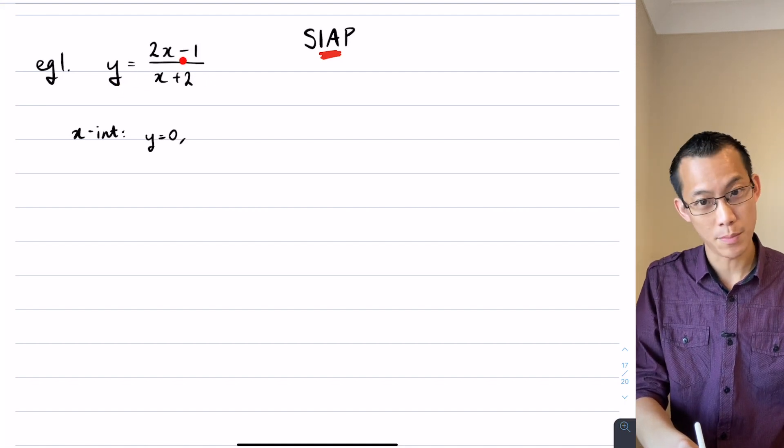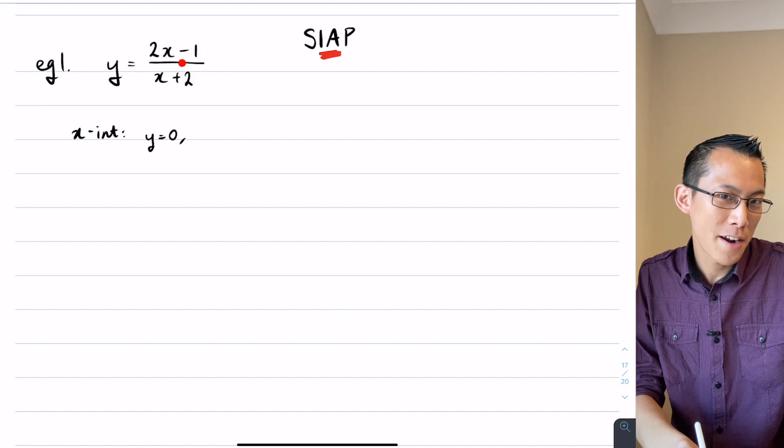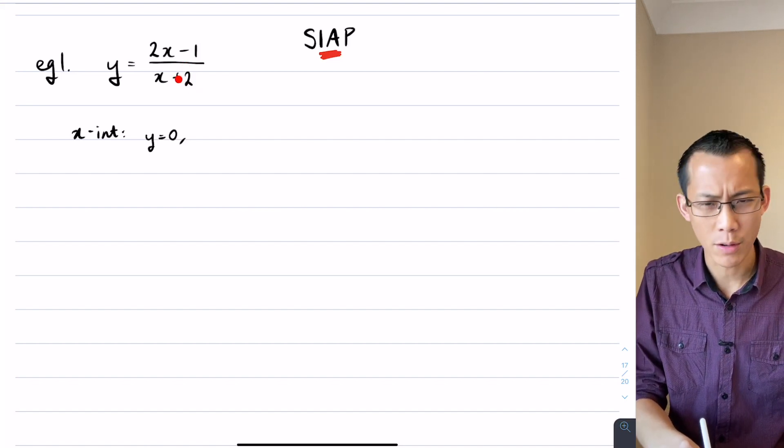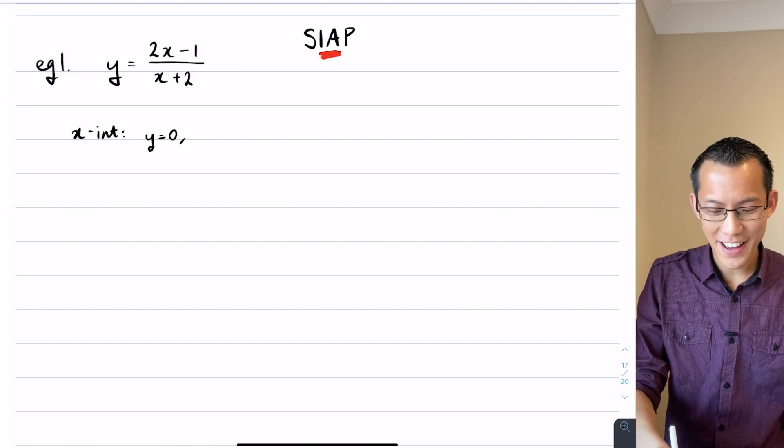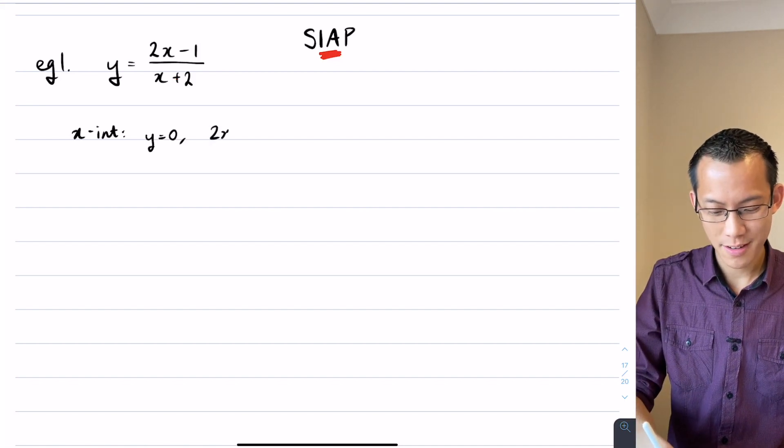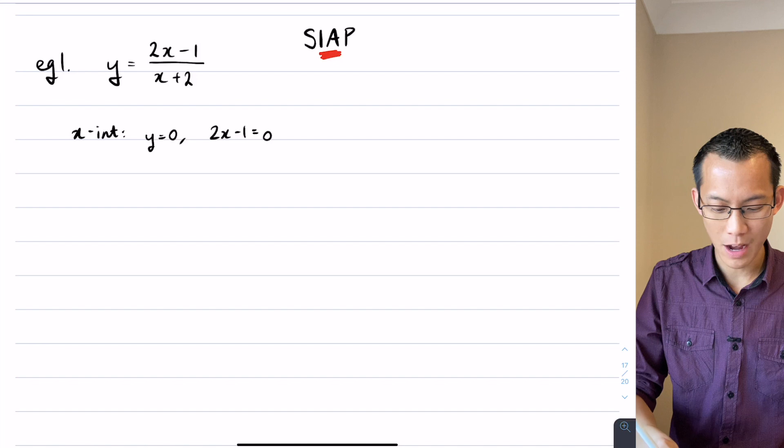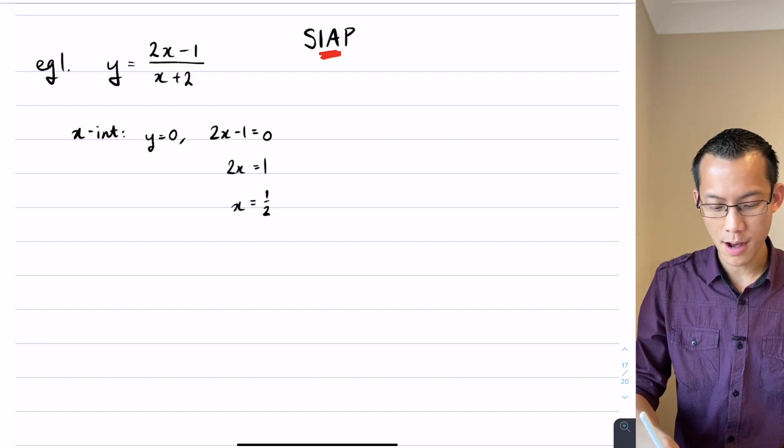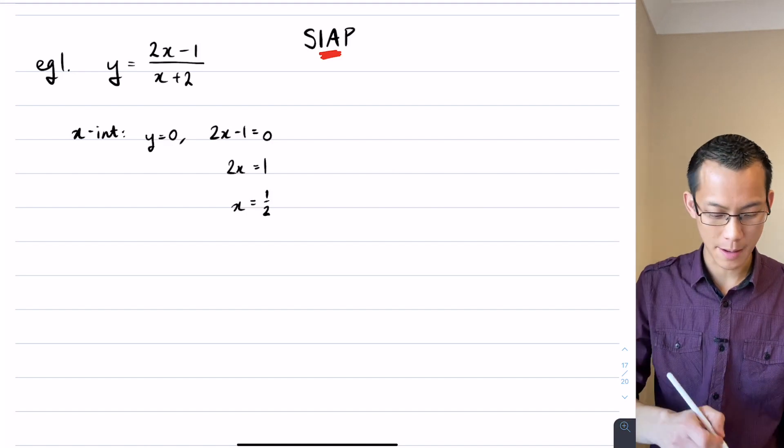What you need is for the numerator to be 0, and then once you have the numerator to be 0, 0 divided by anything is 0 except for 0. Don't divide by 0. So to get that value I want 2x minus 1 to equal 0, so I'm going to get 2x equals 1, so x equals a half. There is my x-intercept.